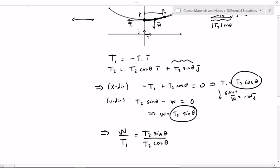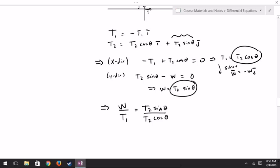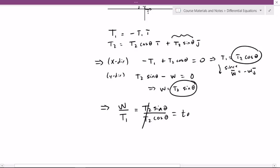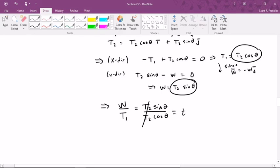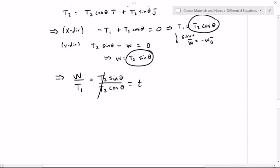If I were to write w divided by T1, I would get T2 sine of theta divided by T2 cosine of theta. The T2's cancel, and I'm left with tangent of theta.